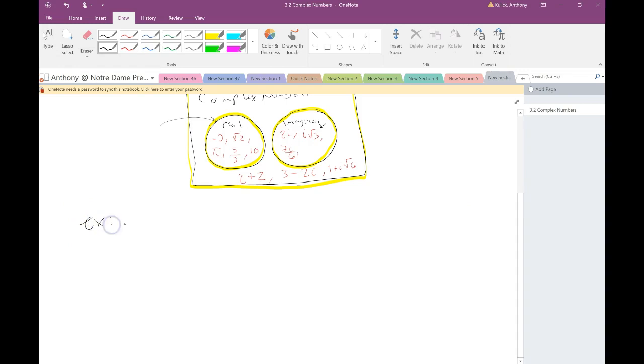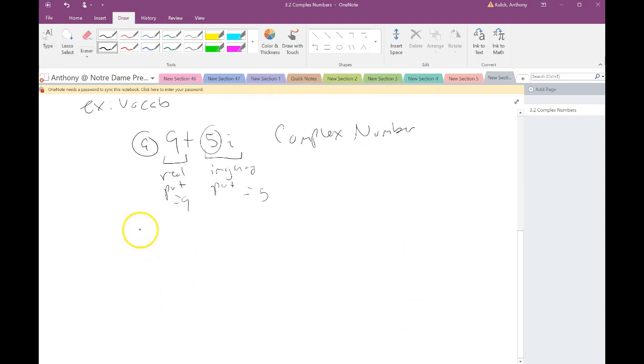So for example, just doing some vocab. 9 plus 5i. What kind of number is this? This is a complex number. And the real part of this complex number is 9. And the imaginary part of this complex number is 5.